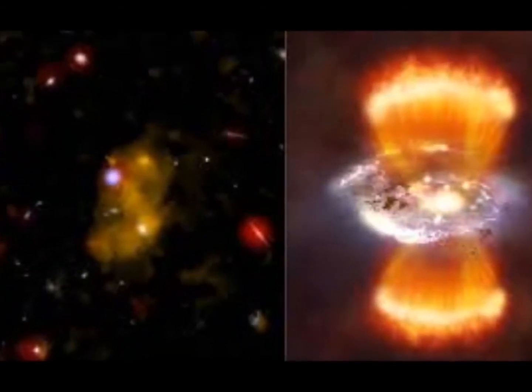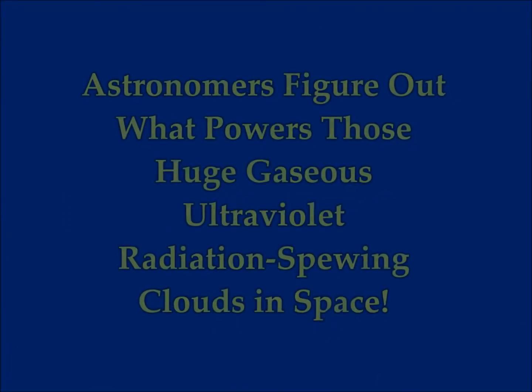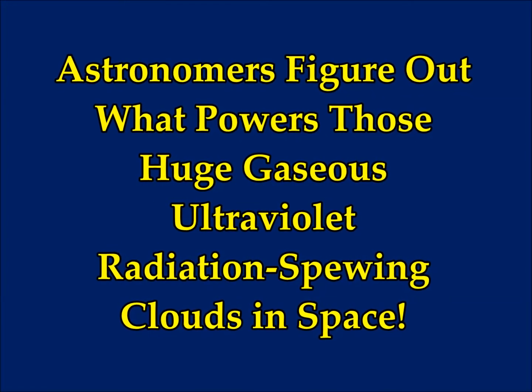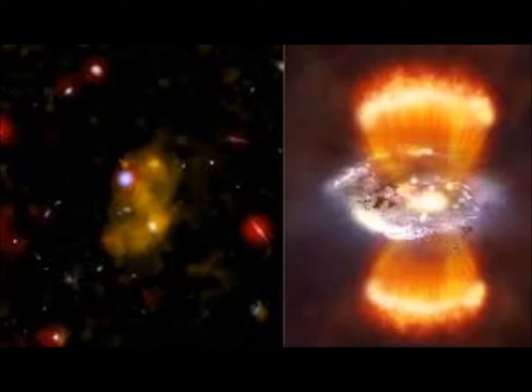Astronomers figure out what powers those huge gaseous ultraviolet radiation spewing clouds in space. Lyman alpha blobs are enormous - you have to think several times the size of our galaxy - brightly glowing concentrations of gas in the distant universe. Discovered about 20 years ago, they've mystified astronomers ever since.